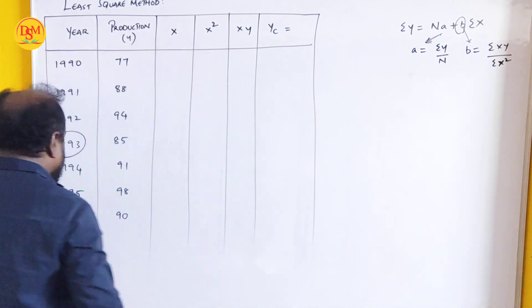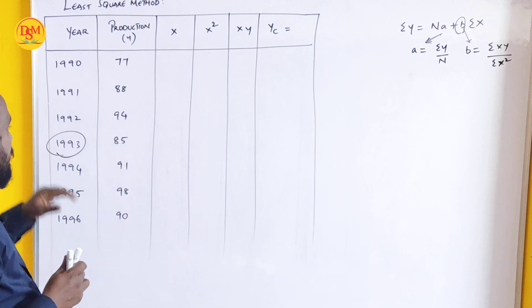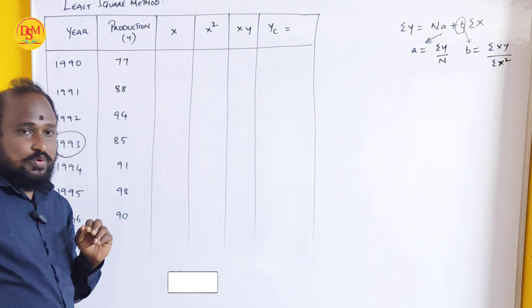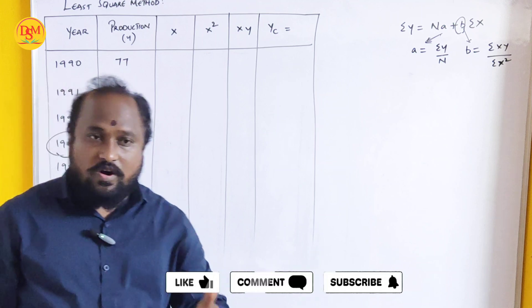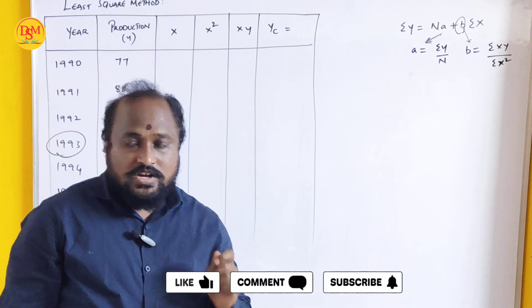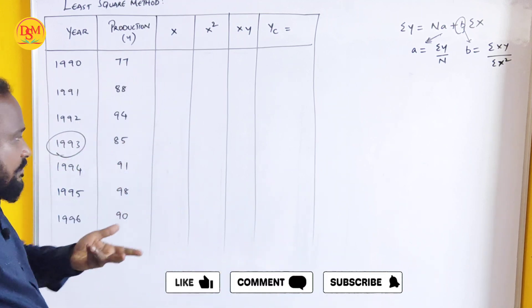What we have to do is we have to see the years first. We have to check which year is in middle. Least square method has two types of problems, one is odd year moving and one is even year. First check if it is odd or even.